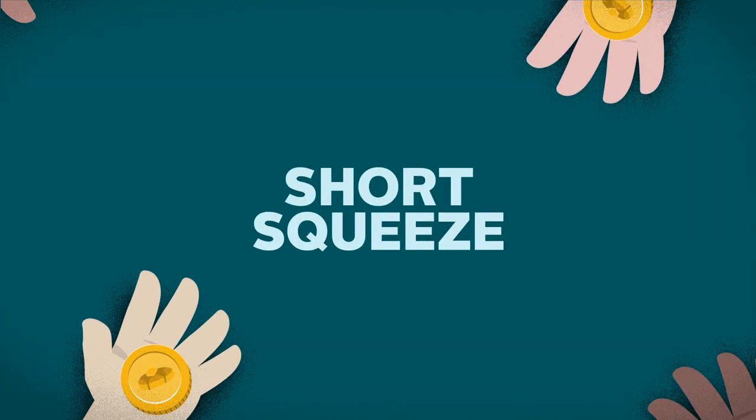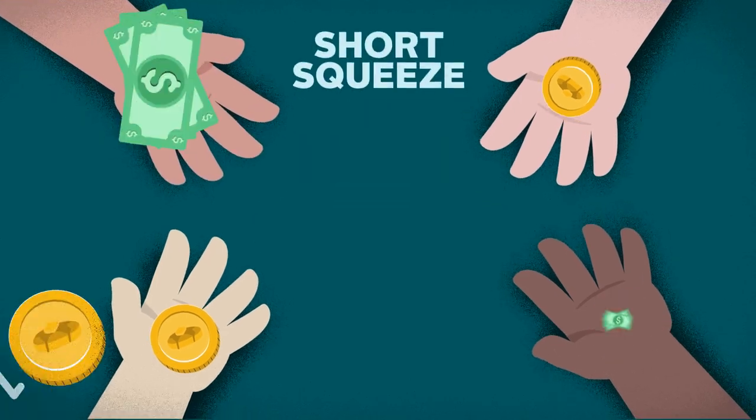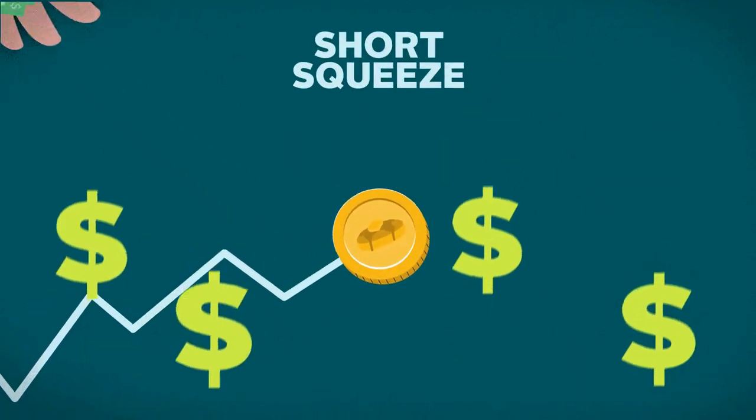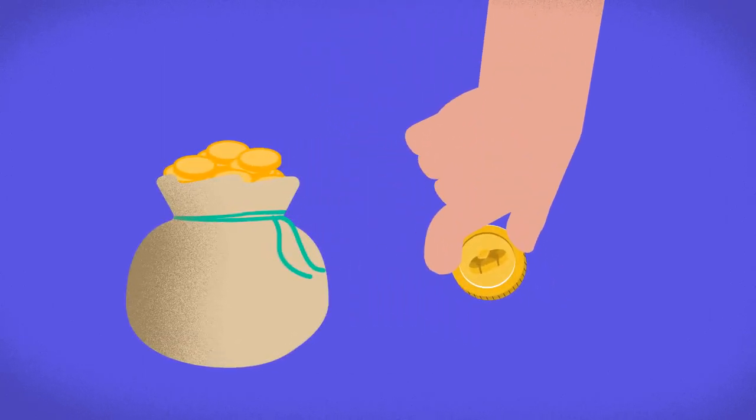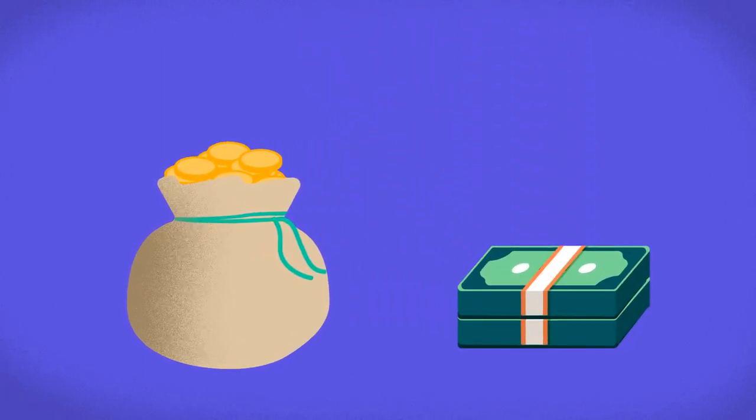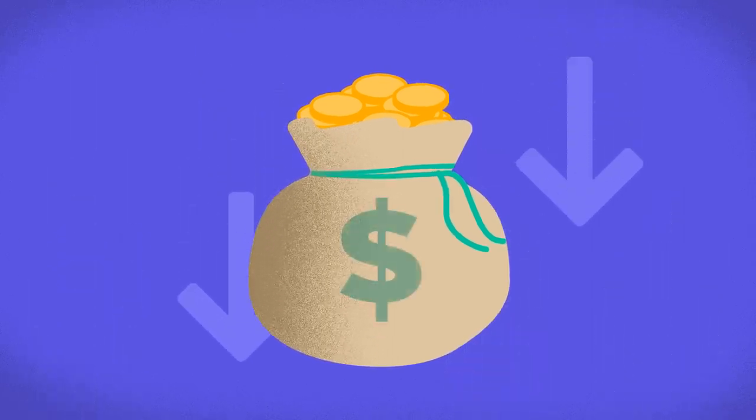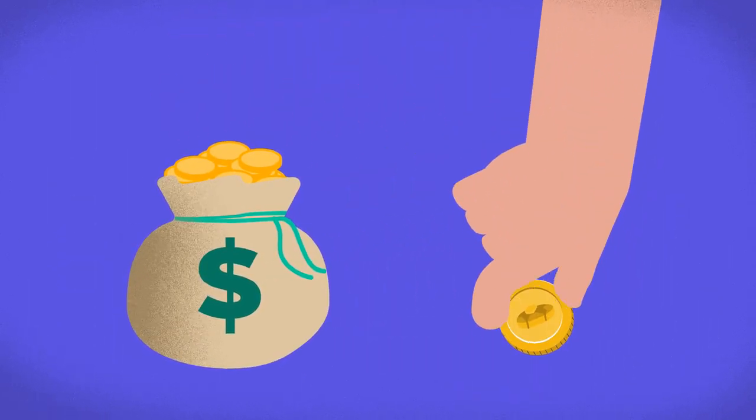A short squeeze happens when many investors short an asset but its price rises instead. Shorting, in simple terms, is the act of borrowing an asset and selling it immediately since you believe that its price will fall, then later buying it back at a lower price and pocketing the difference as your profit.